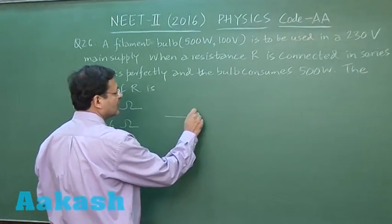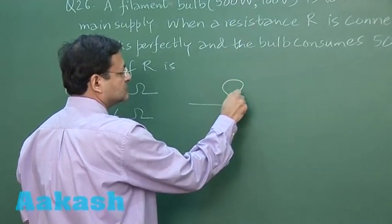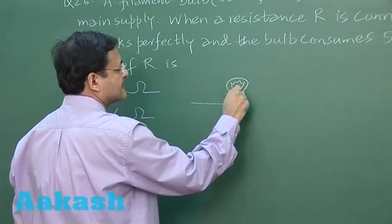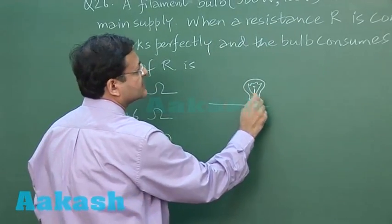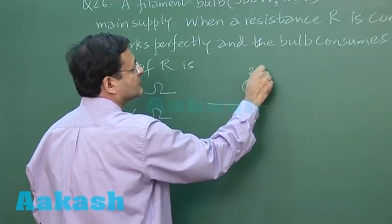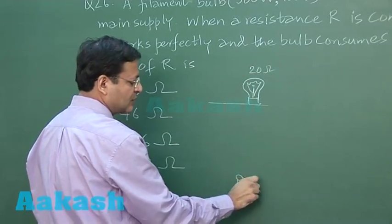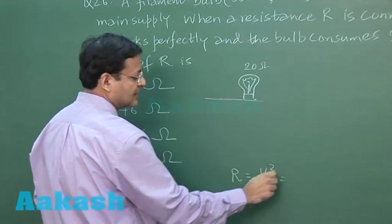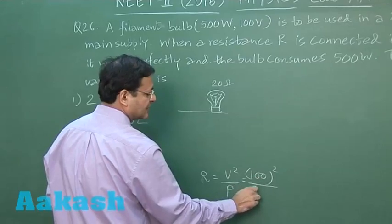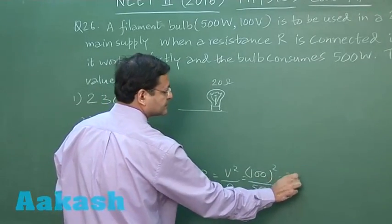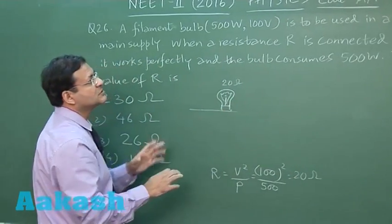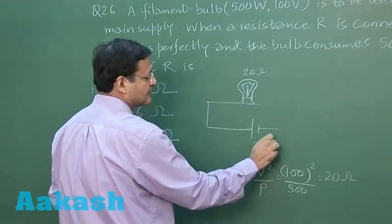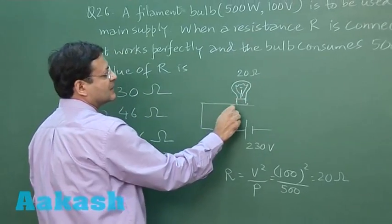Here the situation is that you have the bulb. They are giving you the resistance of 20 ohm. How did you calculate this 20 ohm? R is equal to V square by P. So V is 100, 100 square upon 500. This is 20 ohm, to be used in a 230 volt main supply. The supply is larger, 230 volt, but it can at the most consume 100 volt.